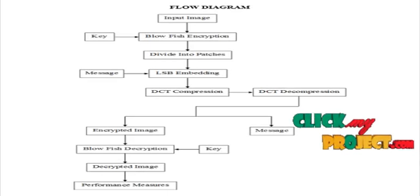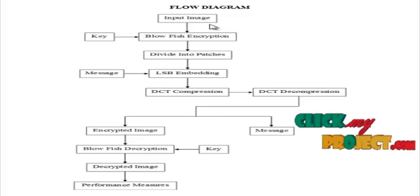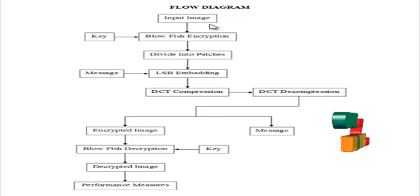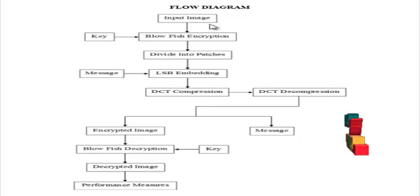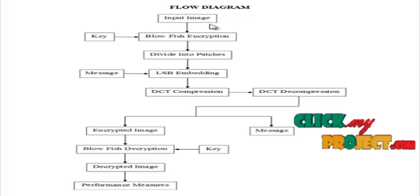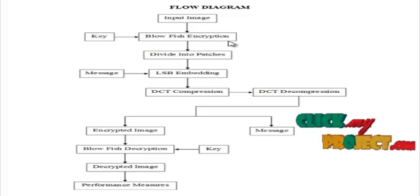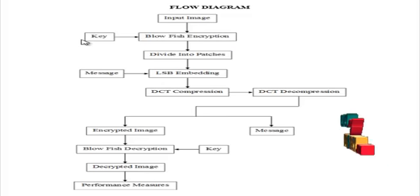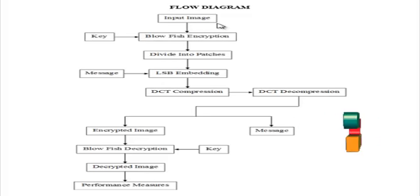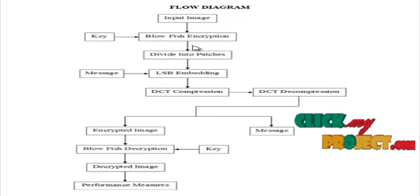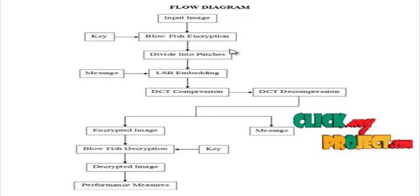Let us see the flow diagram of the process. First, the input images are obtained from the dataset — we can use images from the dataset or provide any other images from outside. The first step is the encryption process. For encryption, the Blowfish encryption process is selected. A key is generated and given to the encryption process along with the input image, and we obtain the encrypted input image, which is then divided into patches.